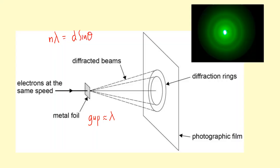Here we have the order number n, normally we just use one. We've got the wavelength lambda and the distance d between the atoms inside the metal foil. And we've got theta, which is the angle.